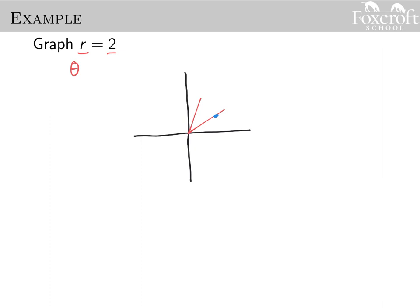I can make theta this and r has to be 2. I can make theta that, r has to be 2. So basically, no matter what direction I go, I'm going to go 2 away from the pole. And if I go the same distance away from a point, what's that going to give me? That's going to give me a circle.